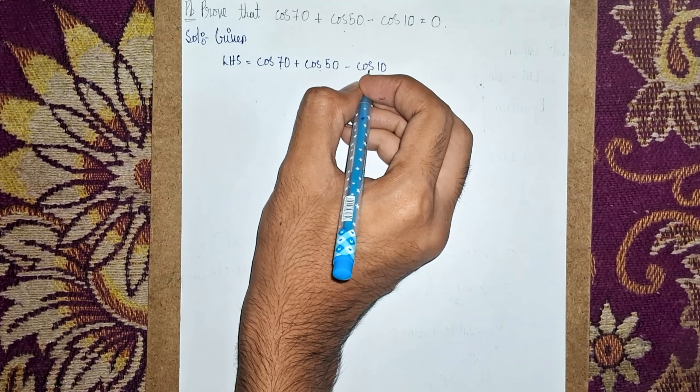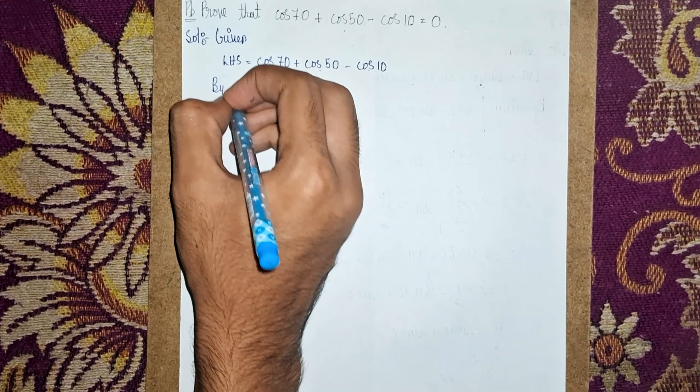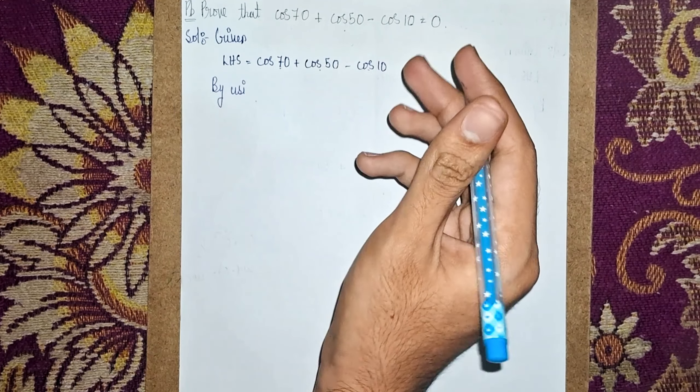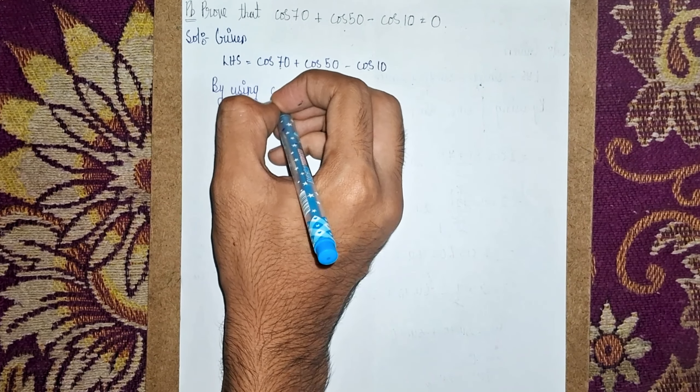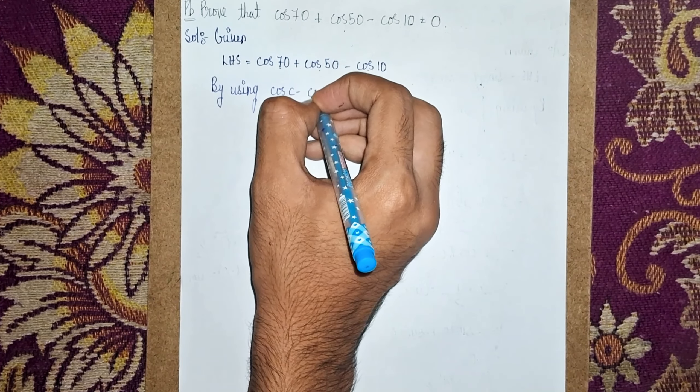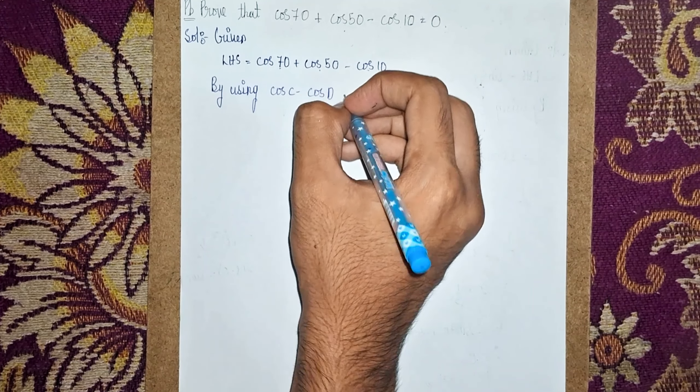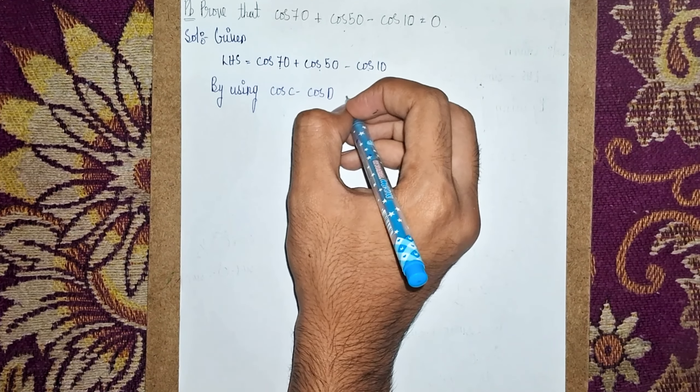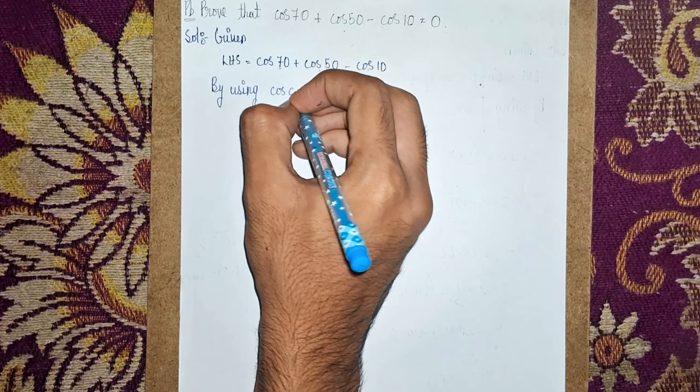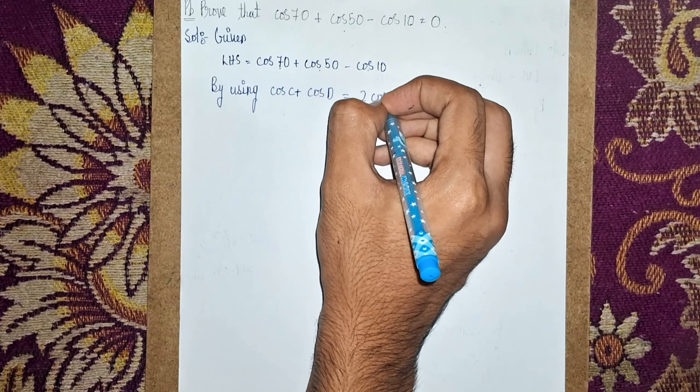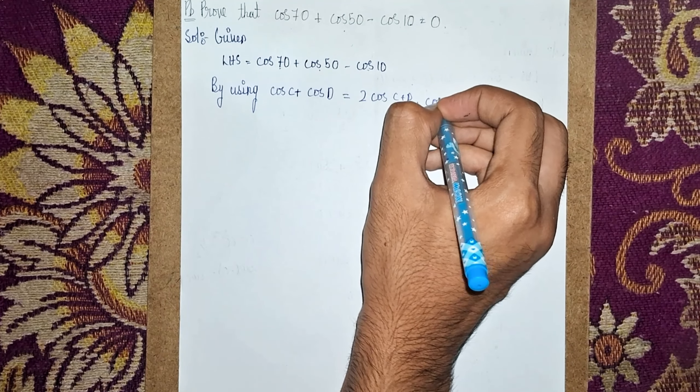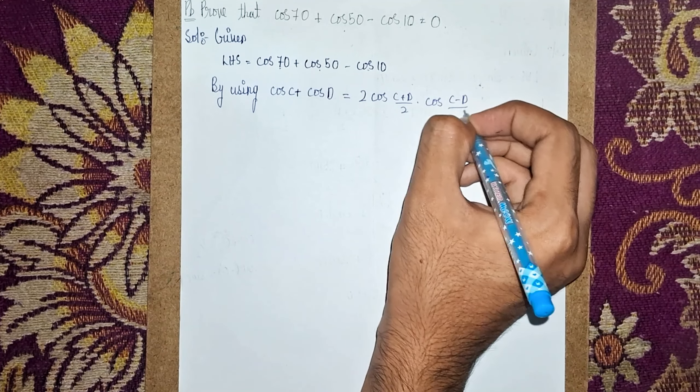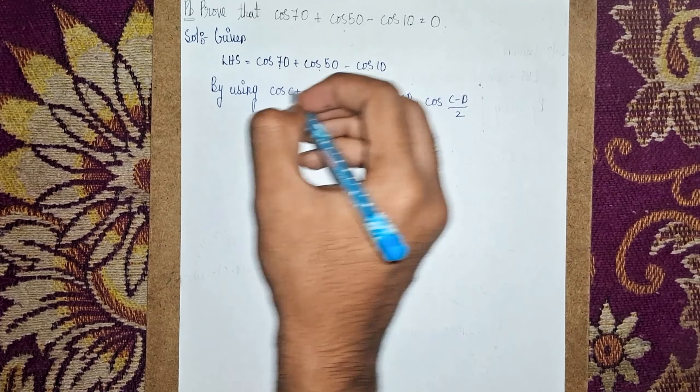Now, by using - this is our transformation formula - cos C + cos D. So this is our transformation formula: cos C + cos D = 2 cos[(C+D)/2] × cos[(C-D)/2].